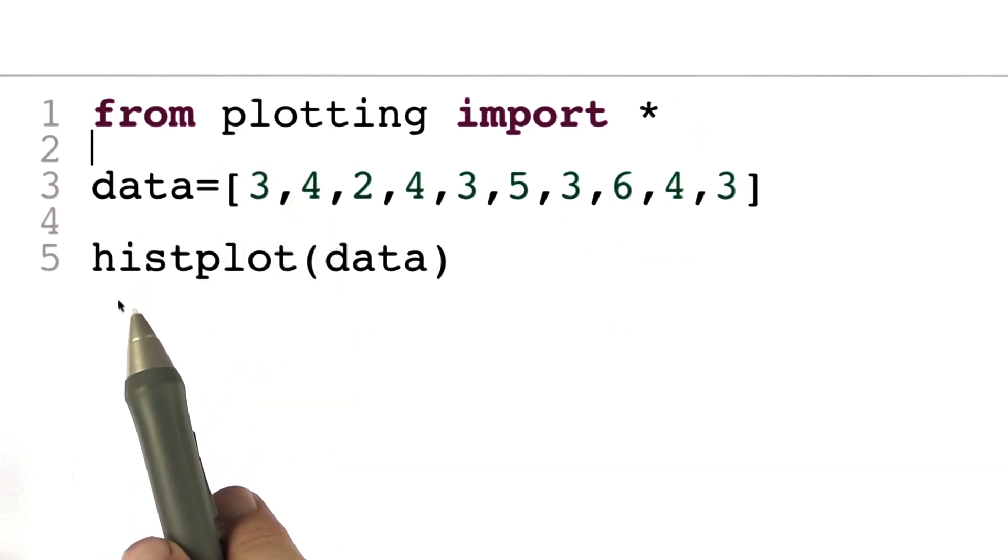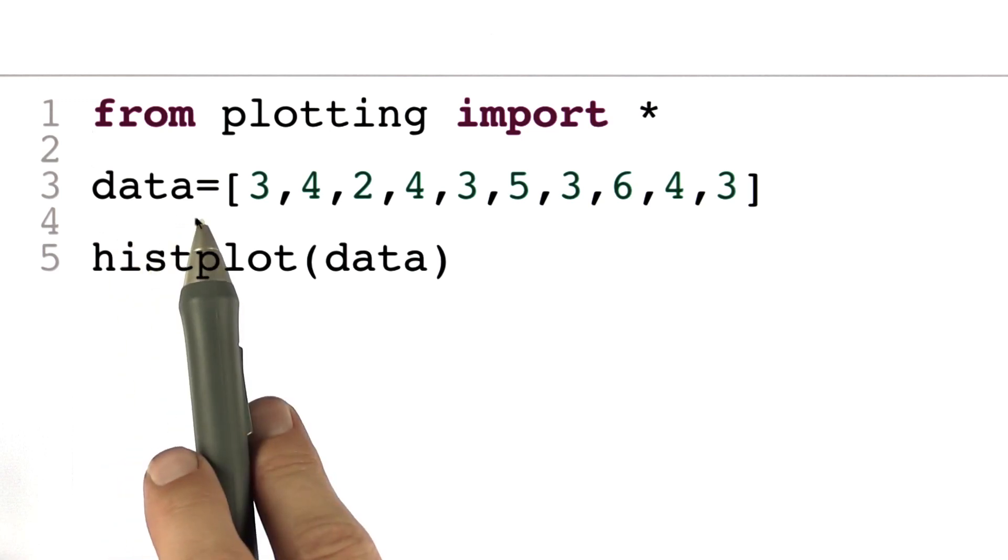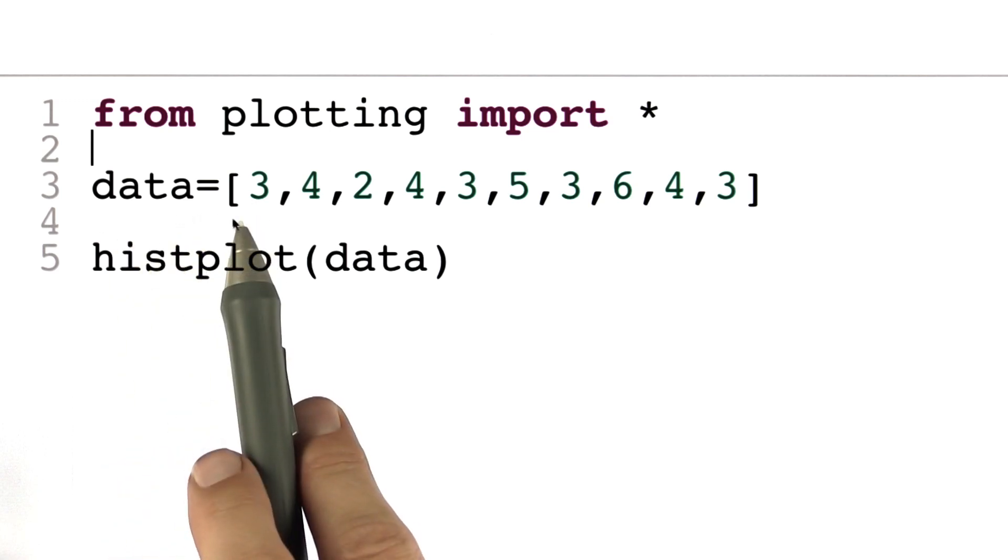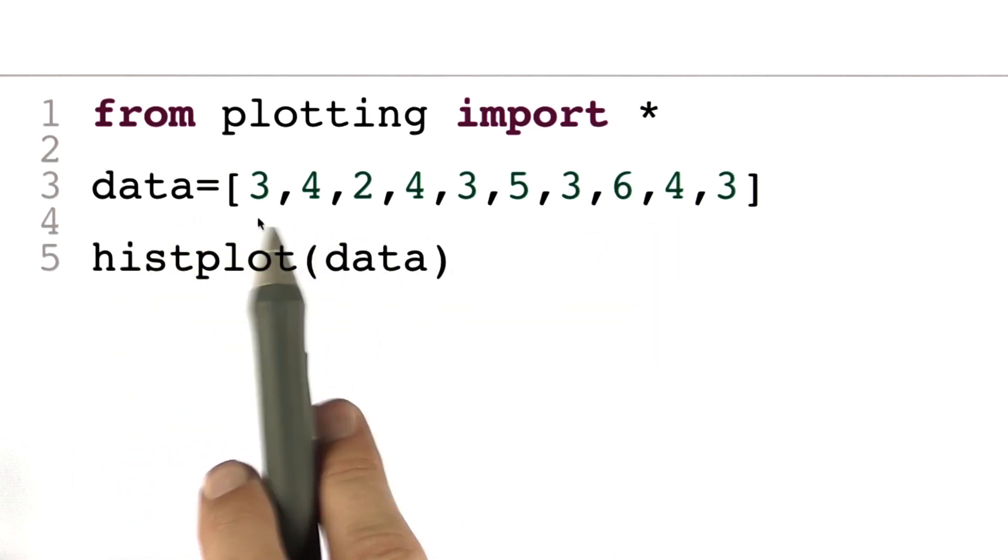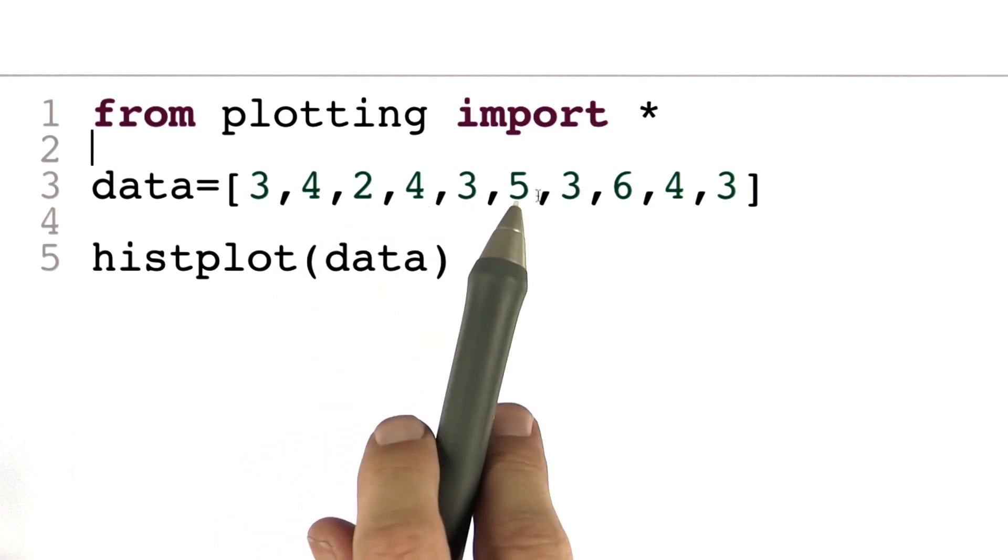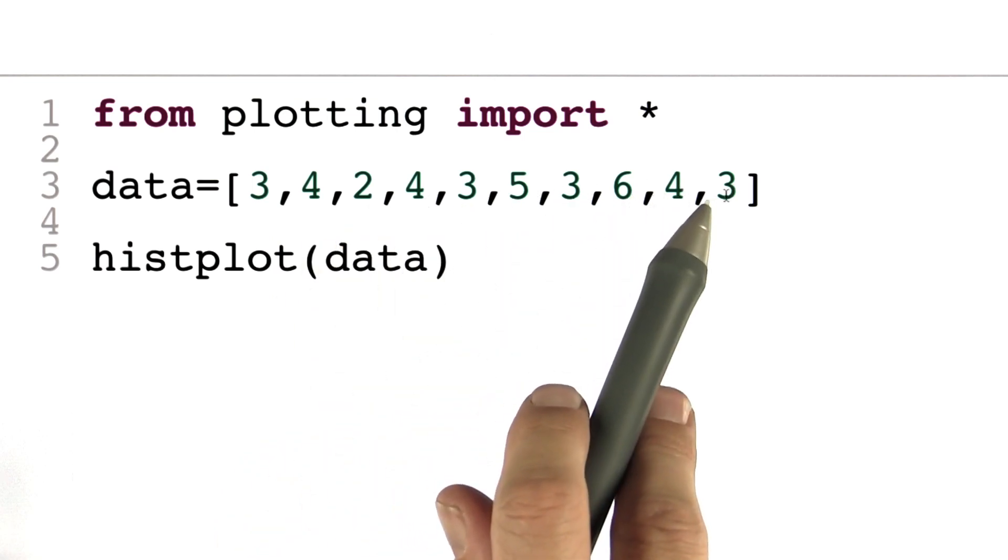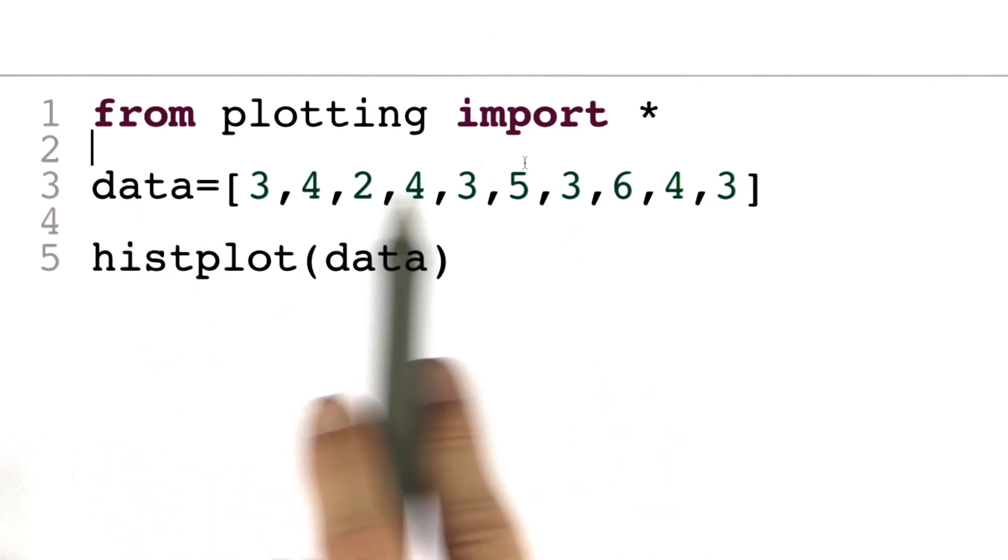The second and third lines are the important ones. I define a data set - a list of 10 elements: 3, 4, 2, 4, 3, 5, 3, 6, 4, 3, that I made up. And with this line,